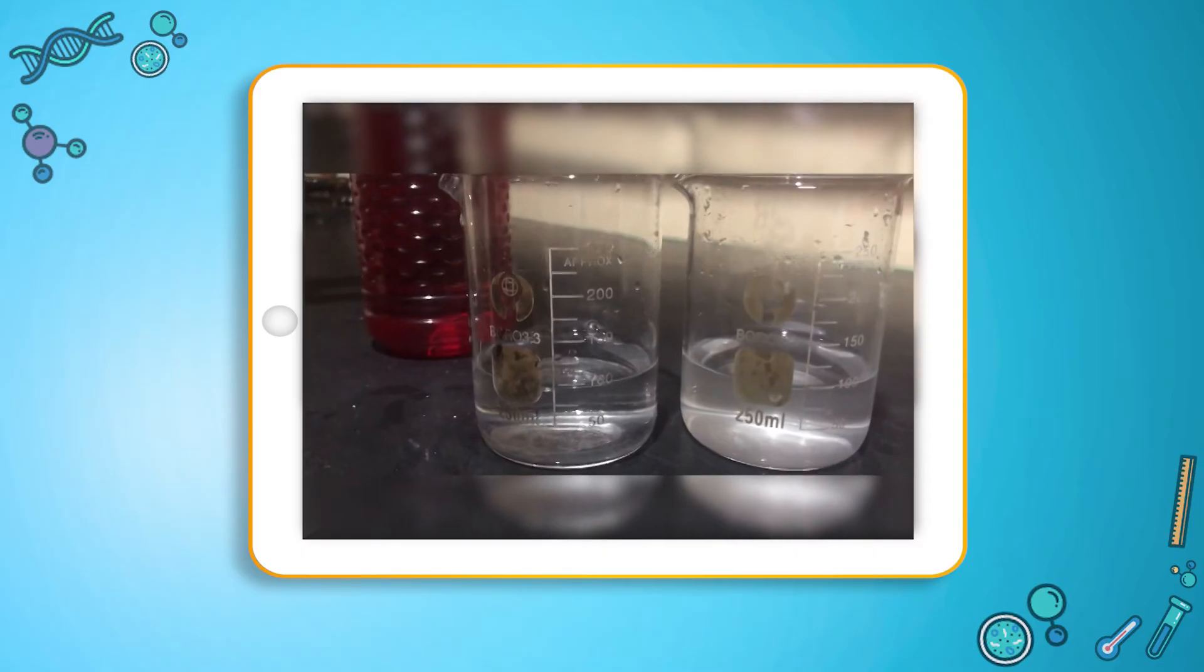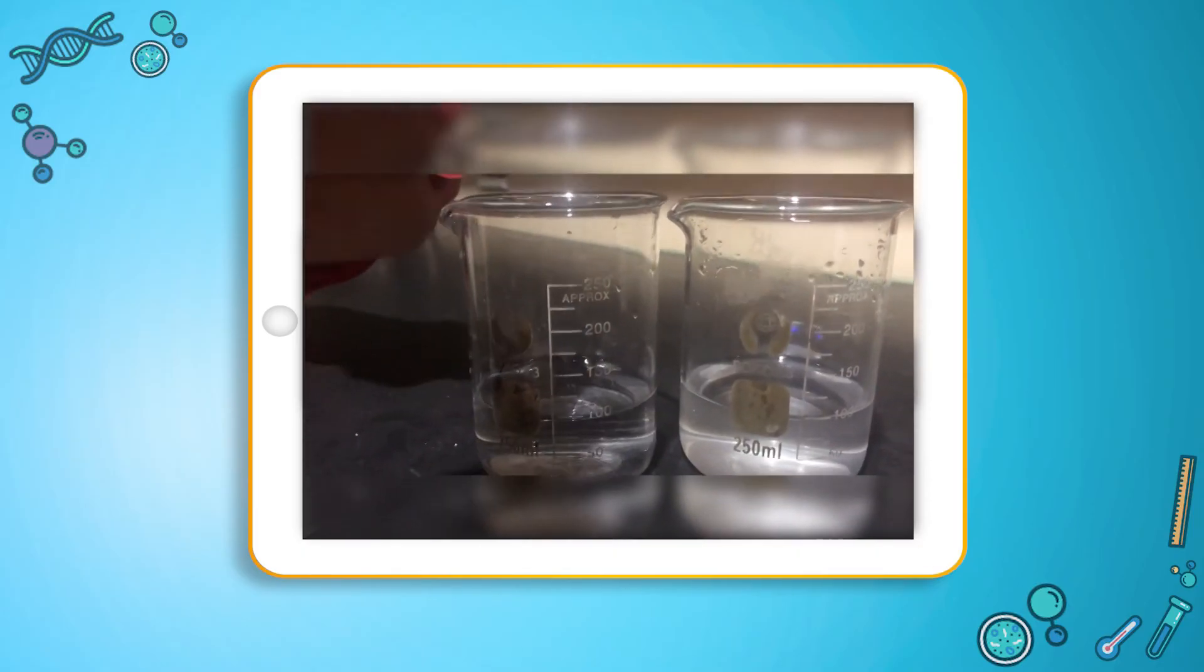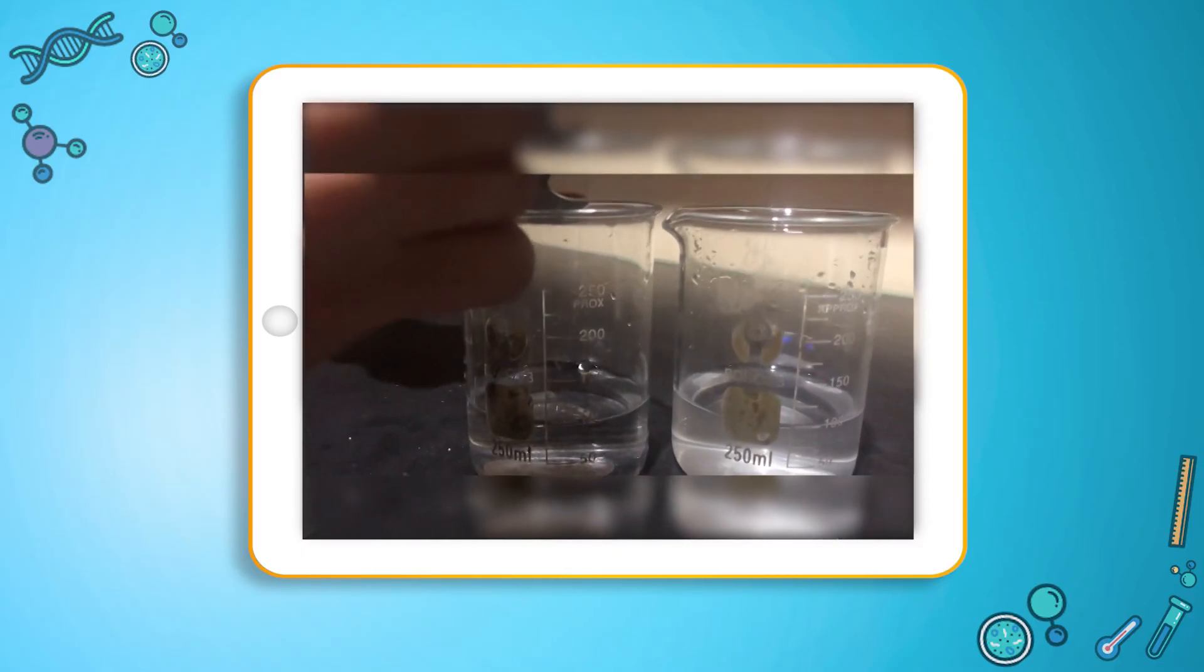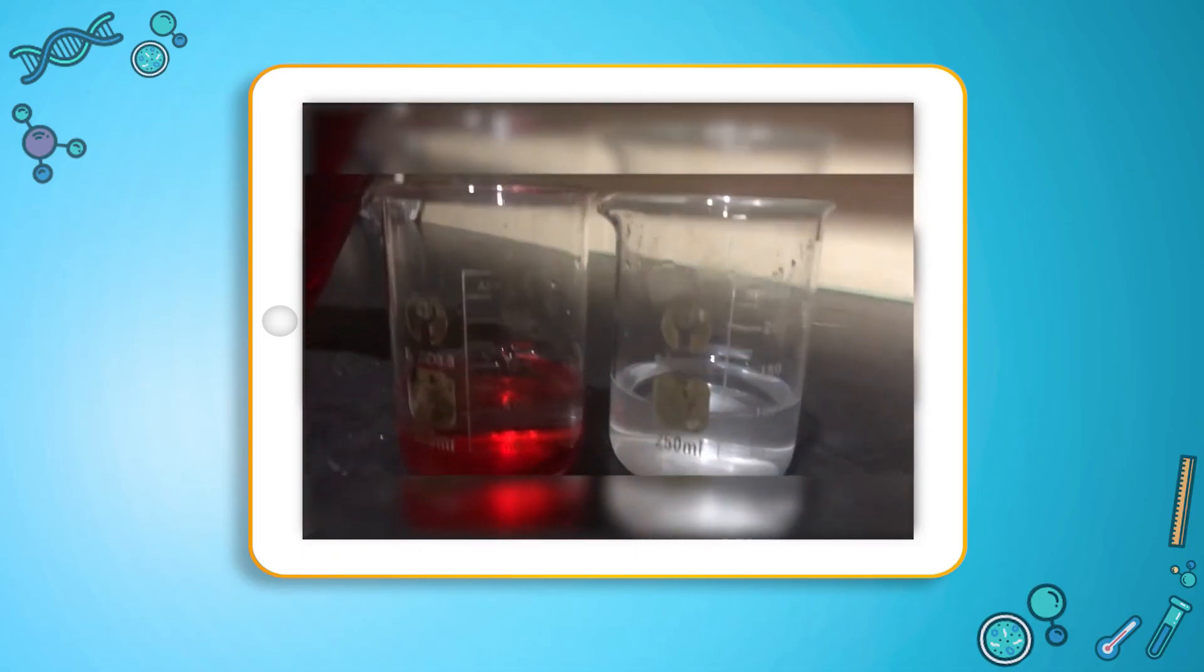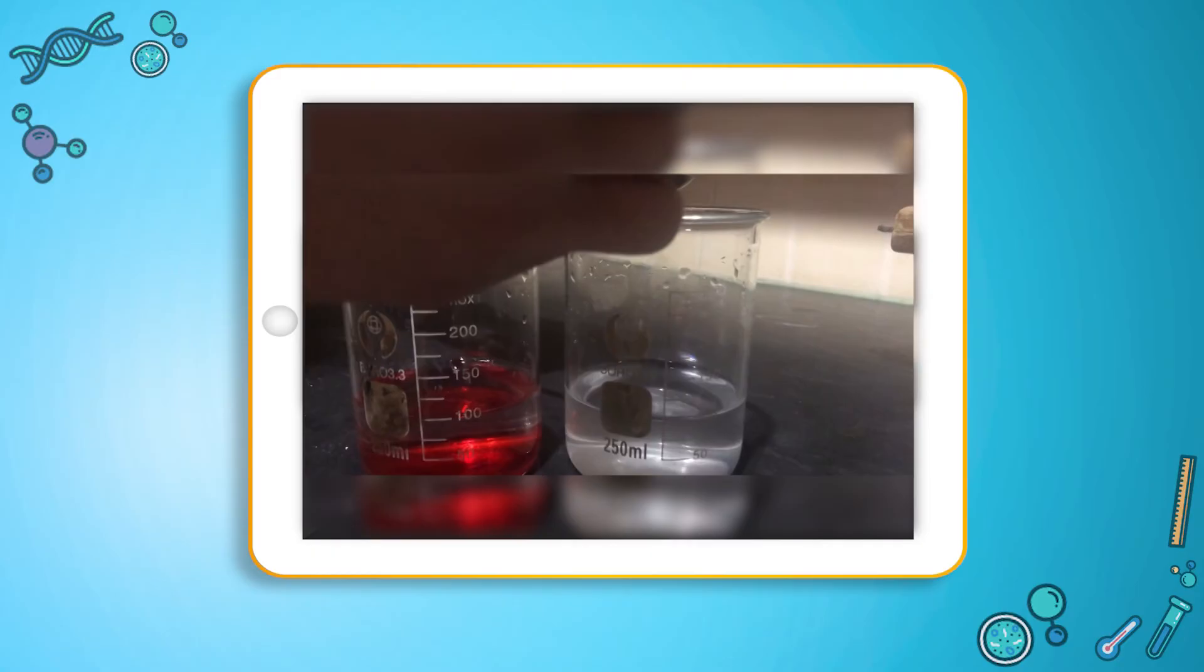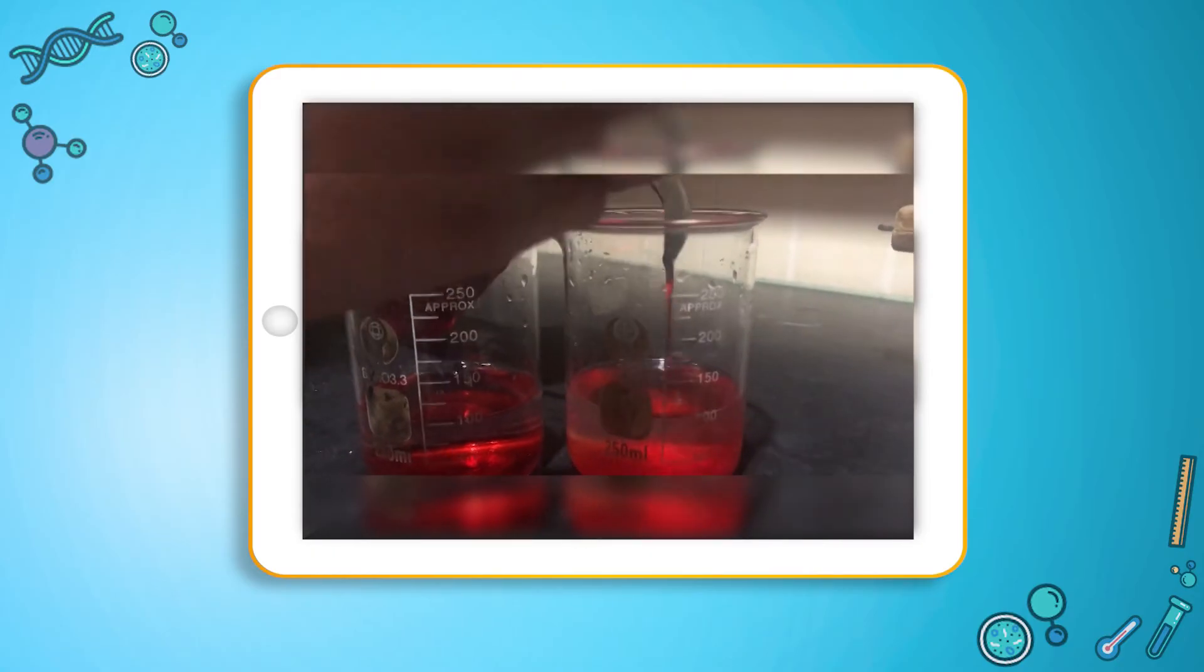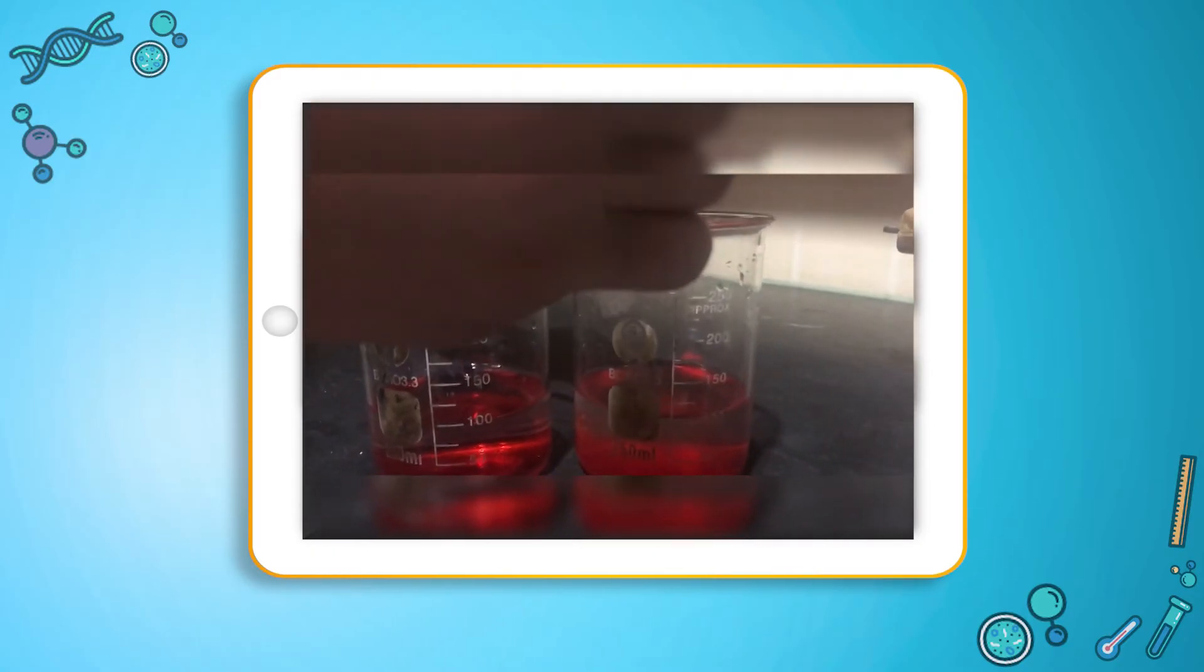In the first beaker here, we are going to put one teaspoon of the solute and on the other beaker we are going to put two teaspoons of the solute and then we are going to mix them both.